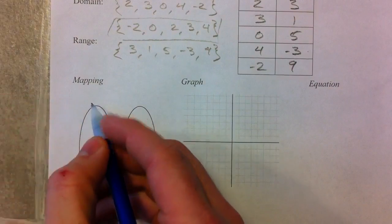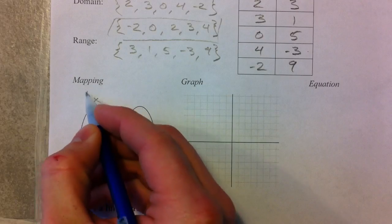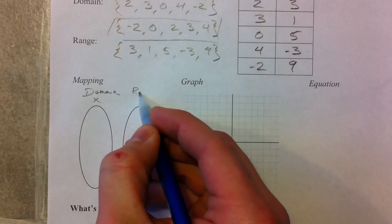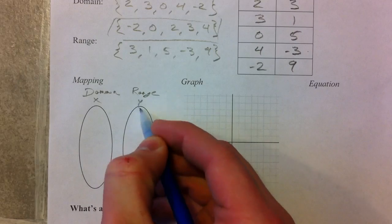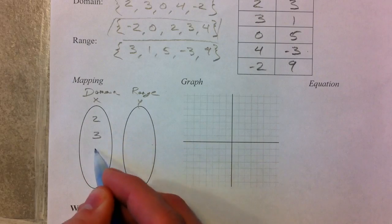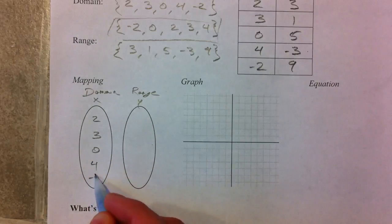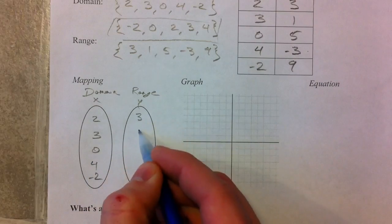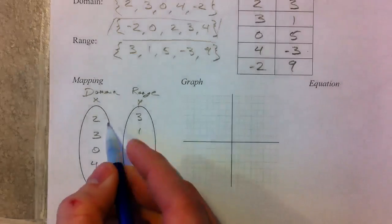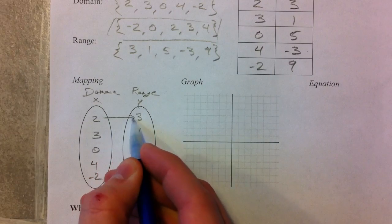A mapping is where you have all of the X's, or all of the domains, in the left oval. And you go to the range in the right oval. And so you have the 2, 3, 0, 4, negative 2. And you just draw arrows to connect the X with the Y that goes with it.